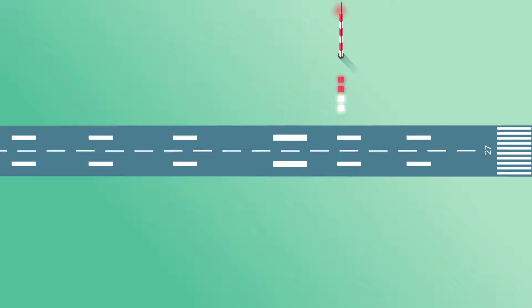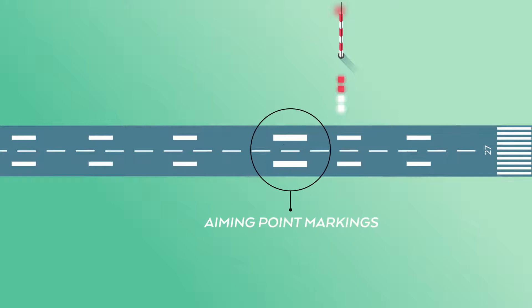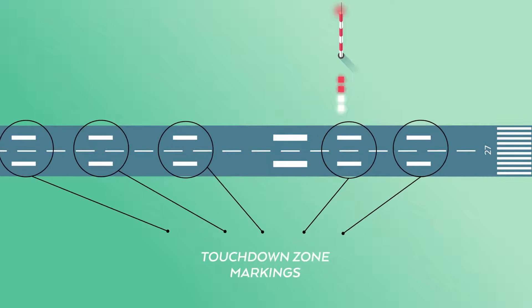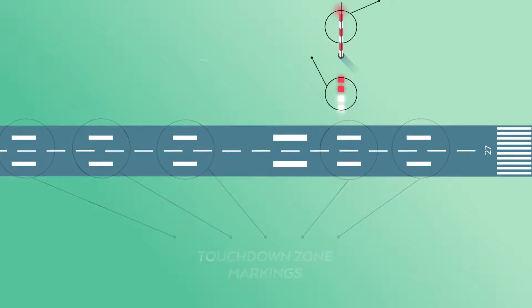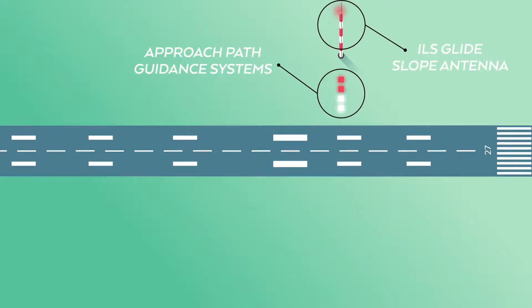To provide orientation during approach and landing, runways include a combination of aiming point markings, which serve as a visual aiming point for a landing aircraft, touchdown zone markings, and approach path guidance systems.